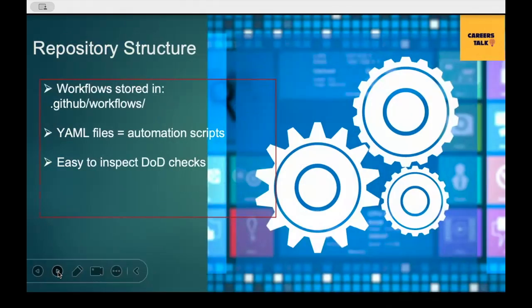What is the repository structure? The automation configuration is not hidden. Every GitHub Actions workflow is stored in the folder: .github/workflows. Inside this folder you will find YAML files like ci.yml. This is the automation script that GitHub follows when an event happens. As a Scrum Master, knowing this location means you can look directly at the configuration to confirm that the definition of done checks are actually running, thus improving transparency.